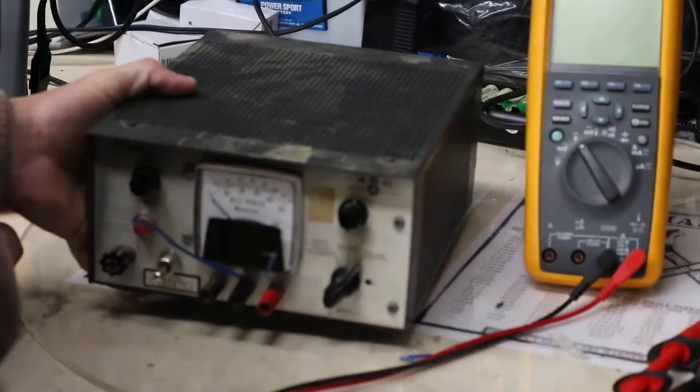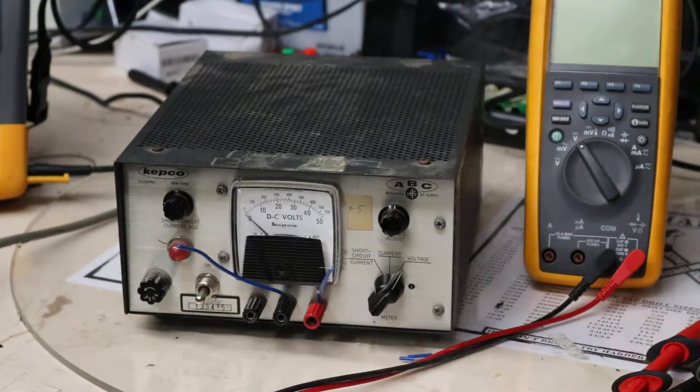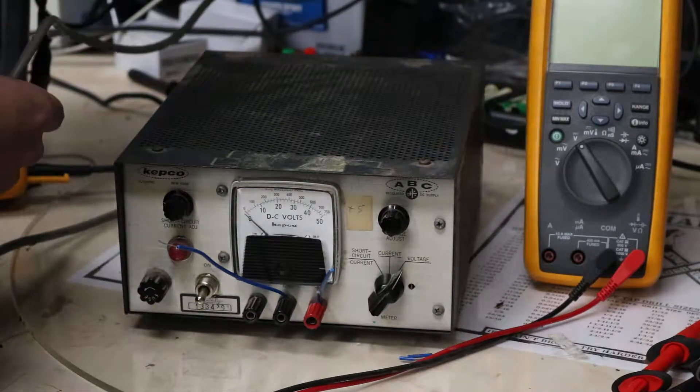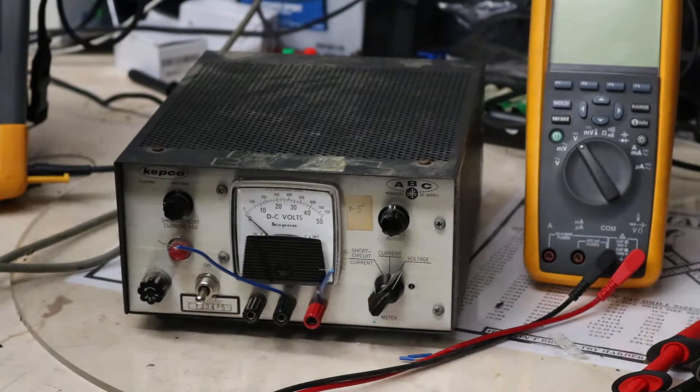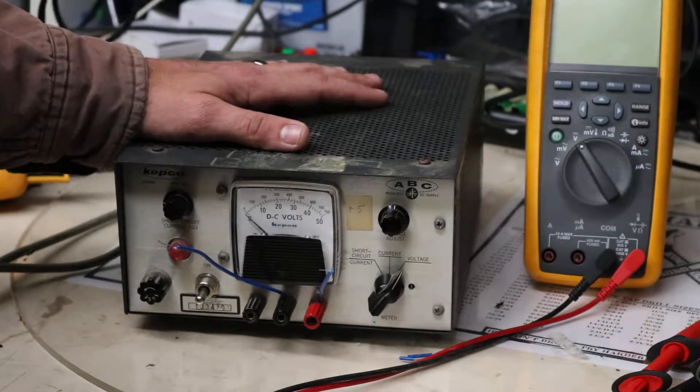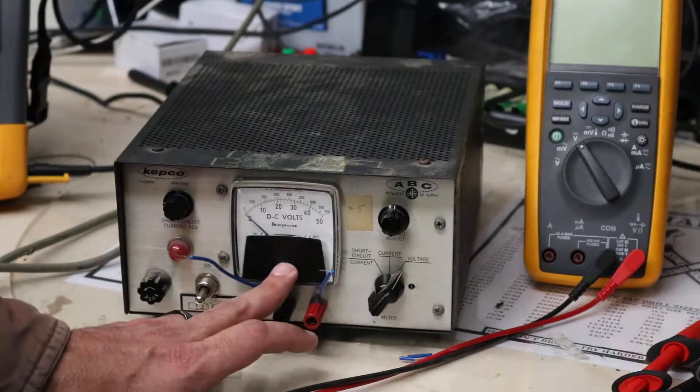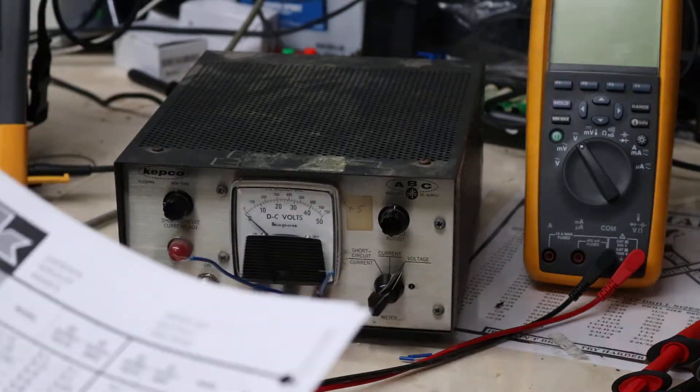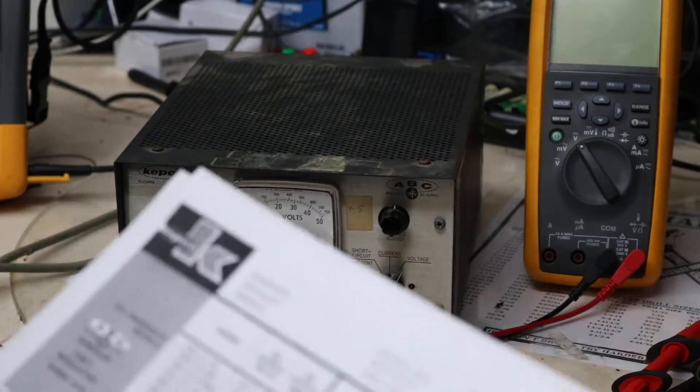So the first thing we're gonna do is hook it up to the voltmeter. I haven't done any adjustment to this whatsoever, haven't tweaked it, haven't even so much as looked at it. I did power it on earlier to make sure that it did at least power up without letting the smoke out. I tried to look up the vintage of this particular power supply. I pulled the documentation from Kepco.